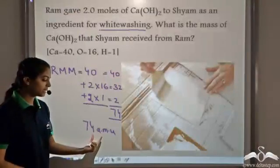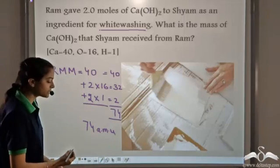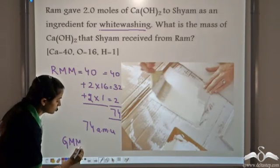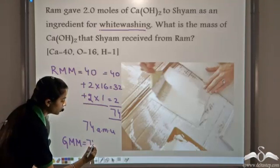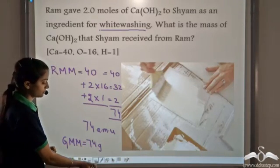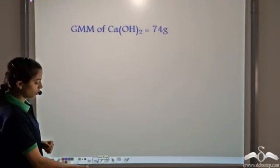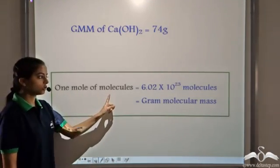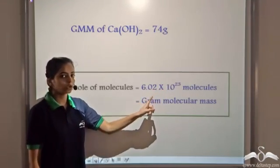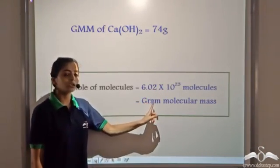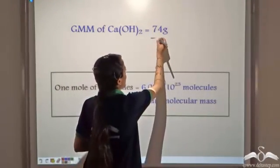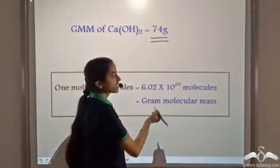When we express the relative molecular mass in grams, we get the gram molecular mass. So the gram molecular mass of calcium hydroxide is 74 grams. Recalling that 1 mole of molecules has mass equal to the gram molecular mass, we see that 74 grams is the mass of 1 mole of calcium hydroxide.